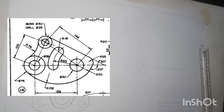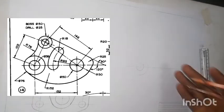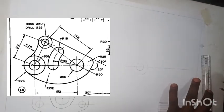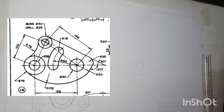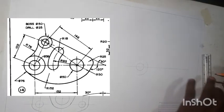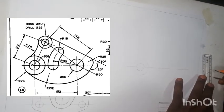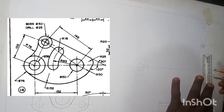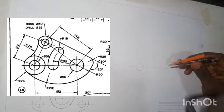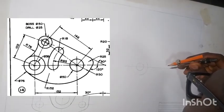Now we have a circle on the right-hand side with a diameter of 50mm. That means the radius is 25mm. We divide by 2 to get our scaled dimension of 12.5. We will place that at the center of the segment.